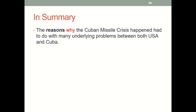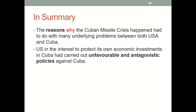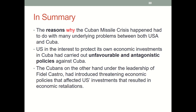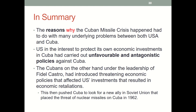In summary, the Cuban Missile Crisis arose from many underlying problems. The United States and its economic investments in Cuba had carried out unfavorable and antagonistic policies against Cuba. The Cubans, under the leadership of Fidel Castro, had introduced threatening economic policies that affected US investments, resulting in economic retaliations. This pushed Cuba to seek a new ally in the Soviet Union, which placed nuclear missiles on Cuba in 1962. This summarizes the different series of events that happened before the real Cuban Missile Crisis took place.